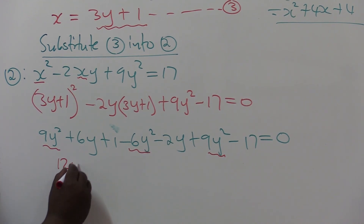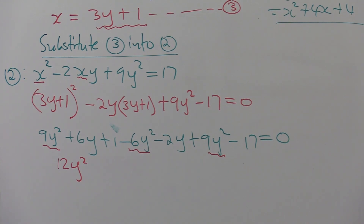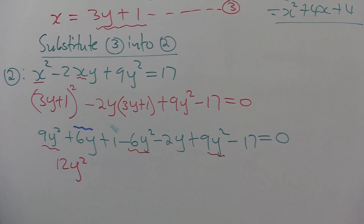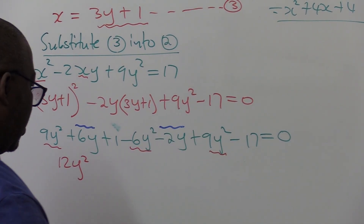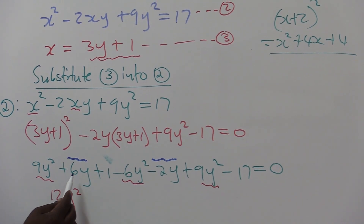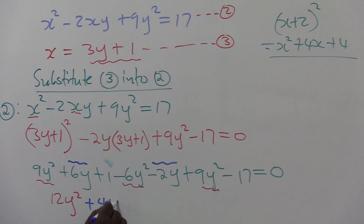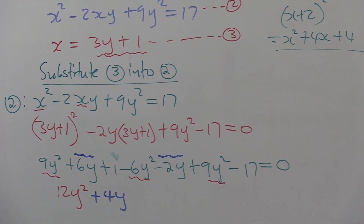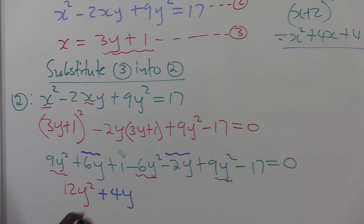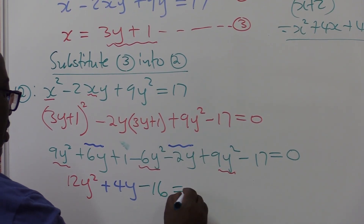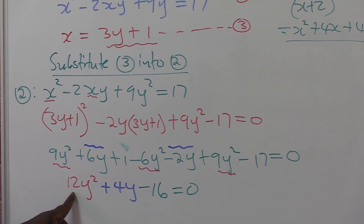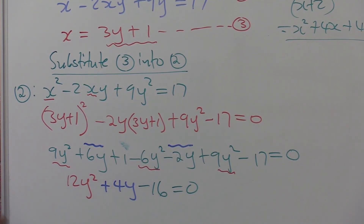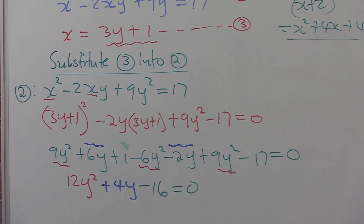Let's start with the y squared terms: nine y squared, plus nine y squared, minus six y squared. Nine plus nine is 18, minus six gives 12, so we have 12y squared. Moving on to the y terms: six y and minus two y gives four y. Then the constants: one minus 17 gives minus 16, equals zero. Now it is in the form ax squared plus bx plus c equals zero — exactly what we want.